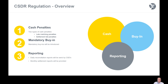Two types of cash penalties will be implemented. First of all, we have the late matching failed penalty, to be applied on any instruction which is matched after the relevant cut-off of its intended settlement date. The second cash penalty is the settlement failed penalty that will be applied to any matched instruction which has reached the intended settlement date and which fails to settle. The reasons for failure can be various, including the being on hold fail option.